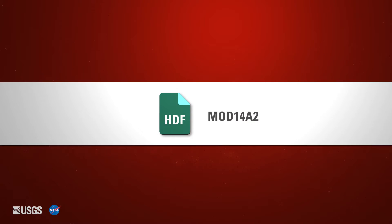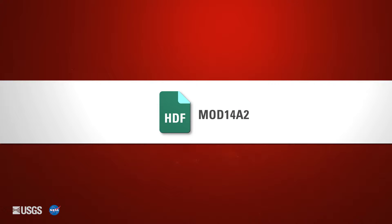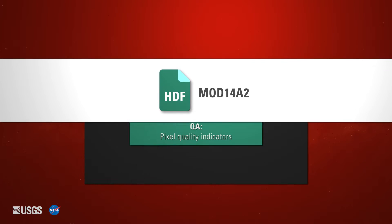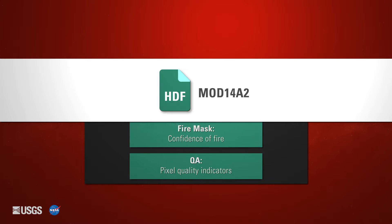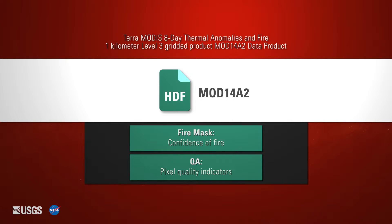Each thermal anomalies and fire product is distributed as a Hierarchical Data Format, or HDF, file. Each MODIS Thermal Anomalies and Fire HDF file contains a Quality Science Data Set layer, which provides users with information regarding the usability and usefulness of the data products. Here is an example of the quality layer for the Terra MODIS Version 6 8-Day Thermal Anomalies and Fire 1km Level 3 Gridded Product, MOD14A2.